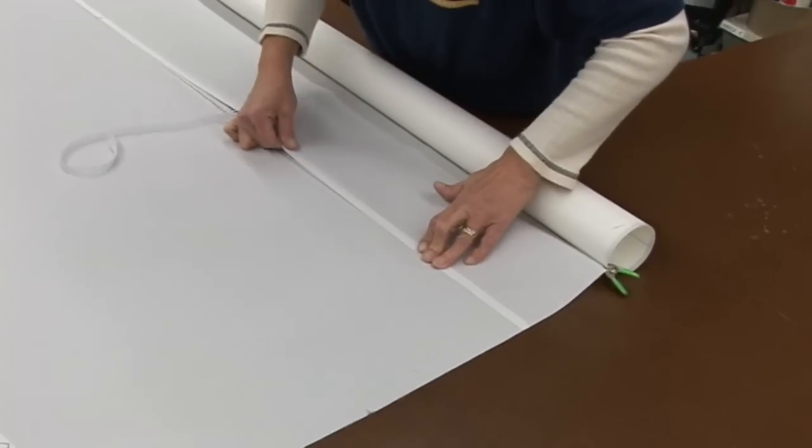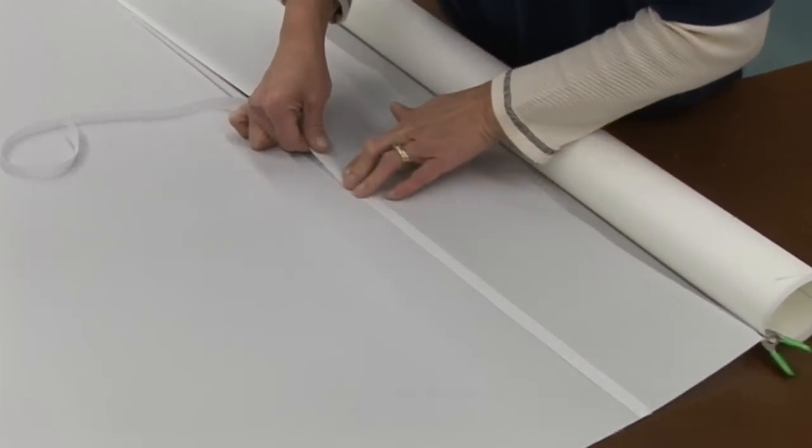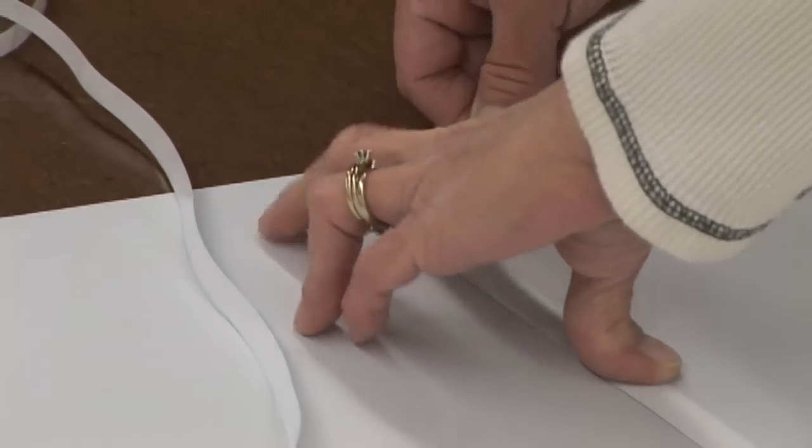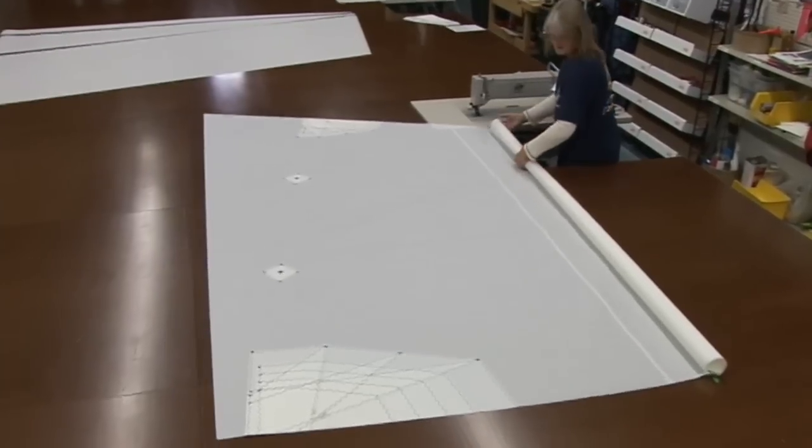Alright, we showed you how to do the corner patches, the reef patches, the intermediate reef points, the full battens, and how to baste and sew each of the seams together.